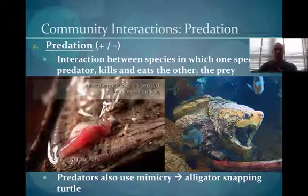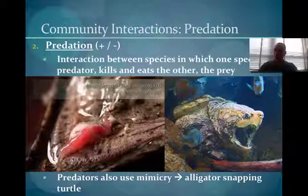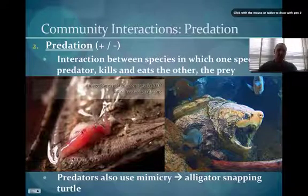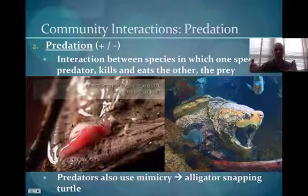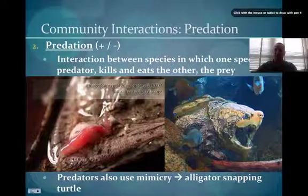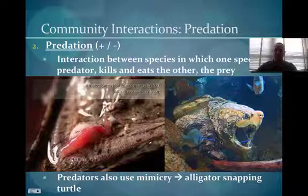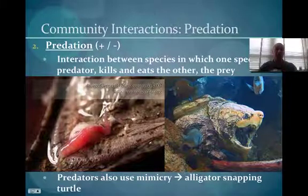An example of predators using mimicry is the alligator snapping turtle. It has a tongue-like structure that it wiggles back and forth while sitting with its mouth open. This acts as bait — when a fish comes near its mouth, the turtle chomps it down. So realize predators use some of these same techniques.